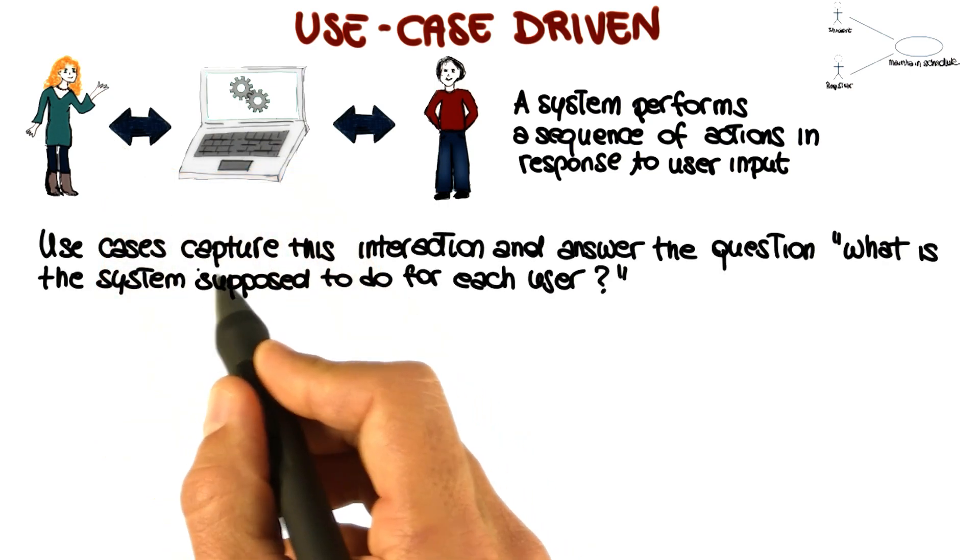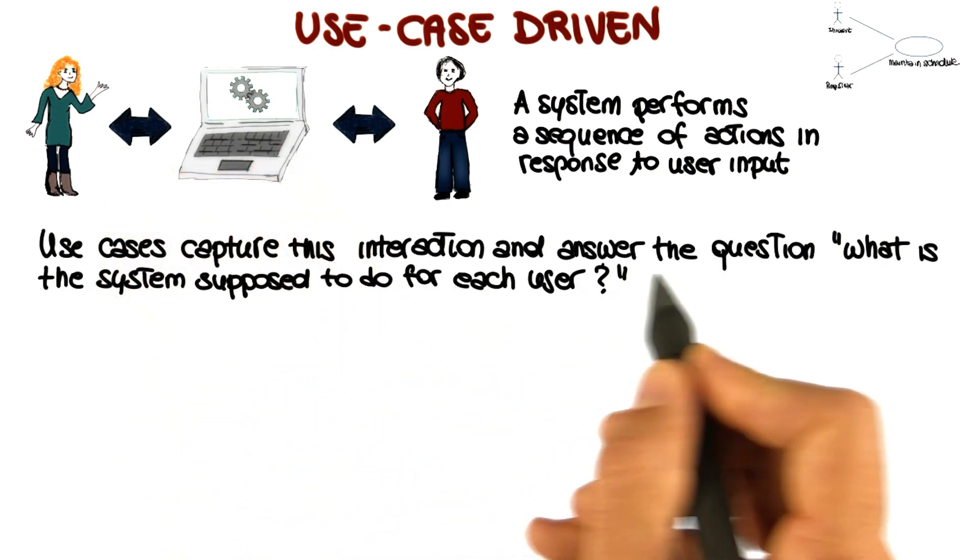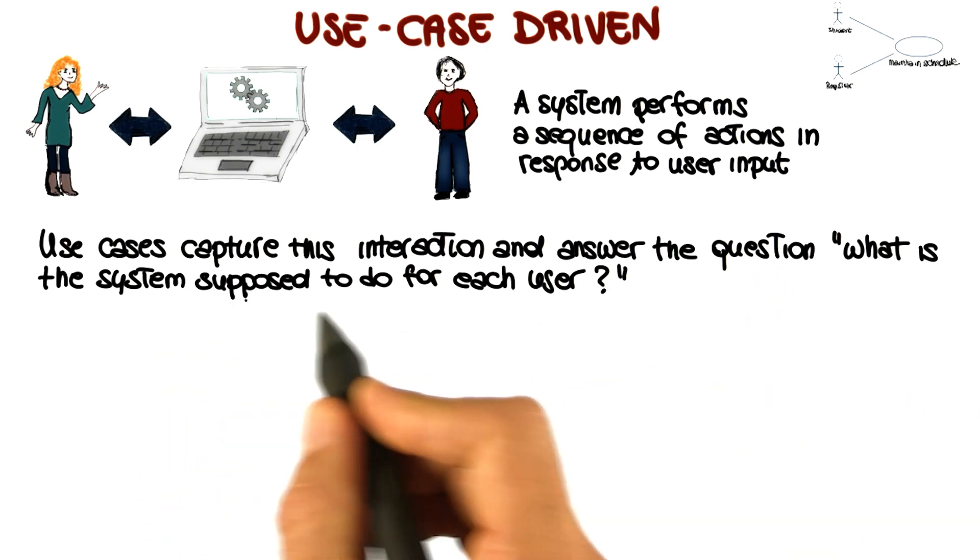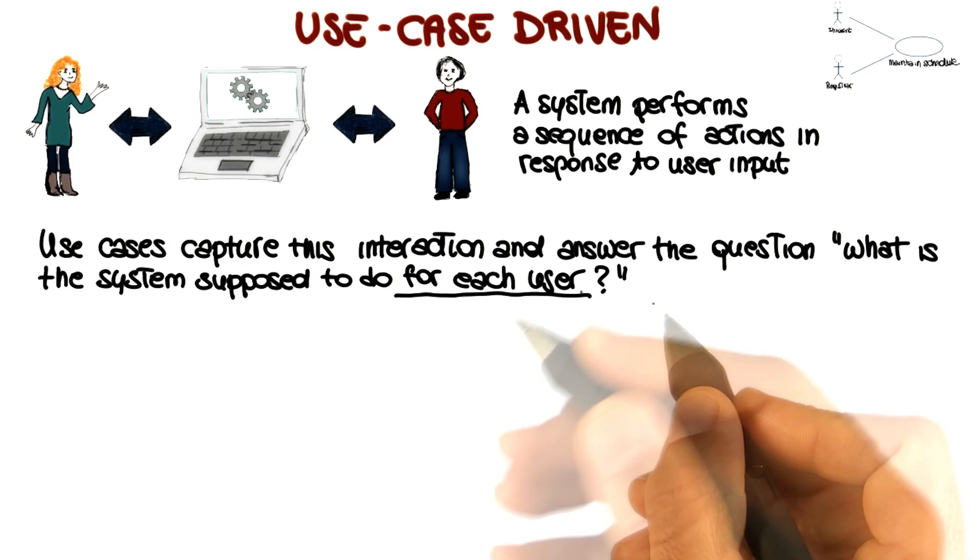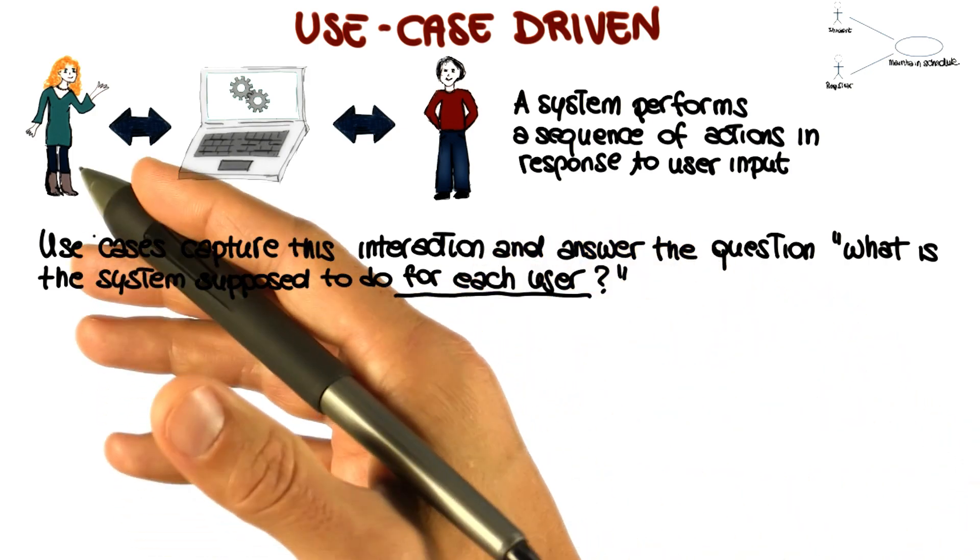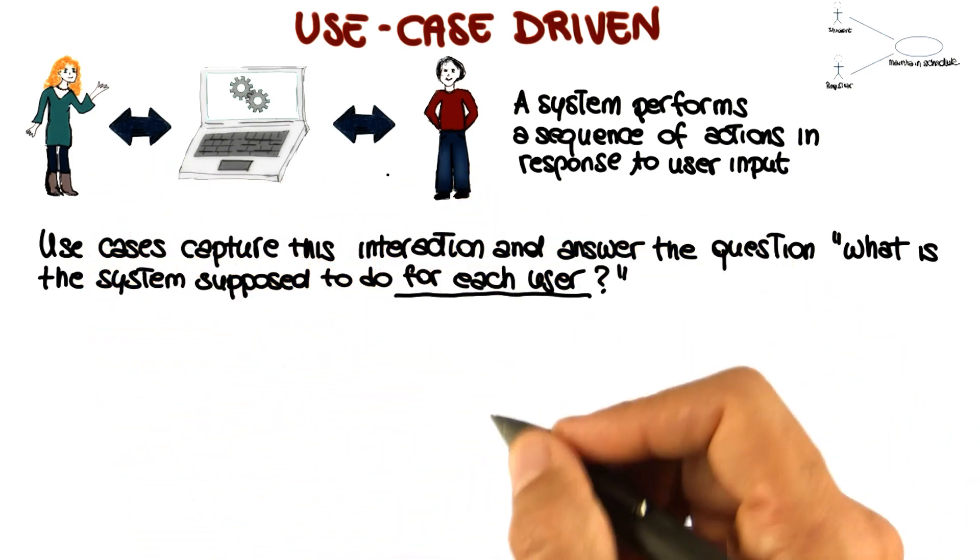Use cases capture exactly this interaction and answer the question: what is the system supposed to do for each user? This is a very important point. They can represent what the system can do for each of the different types of users of the system.